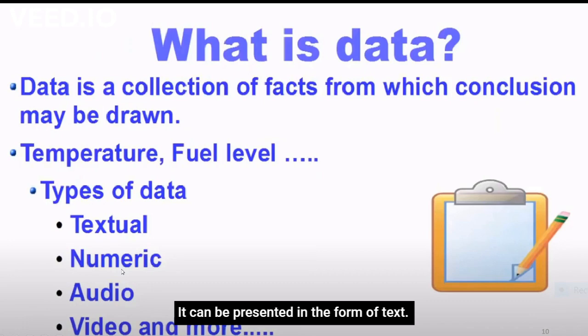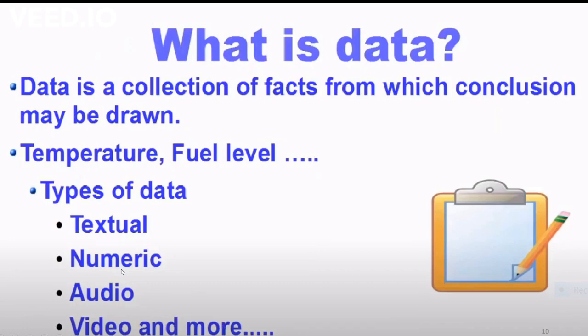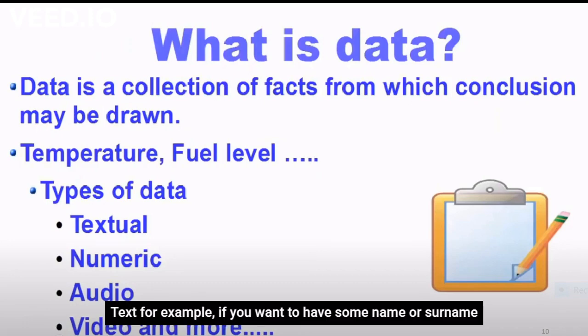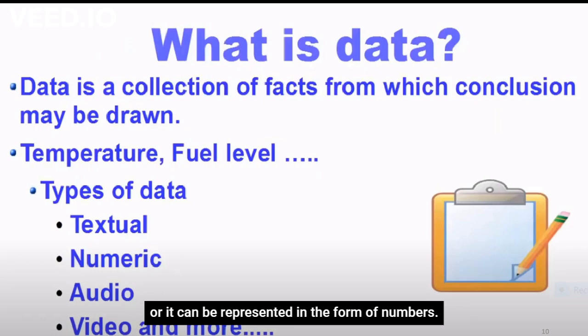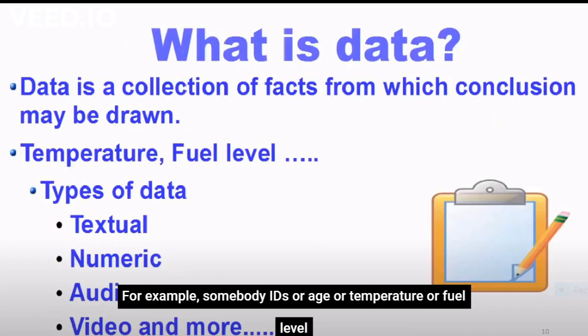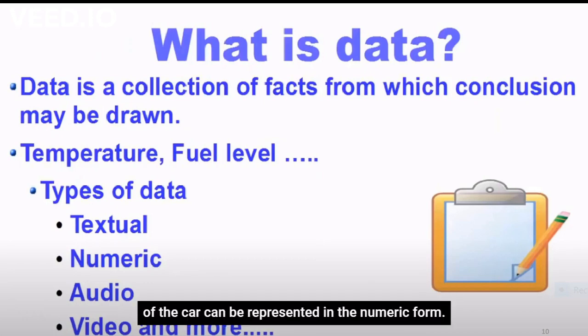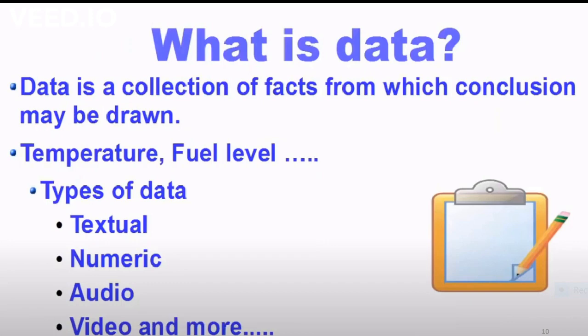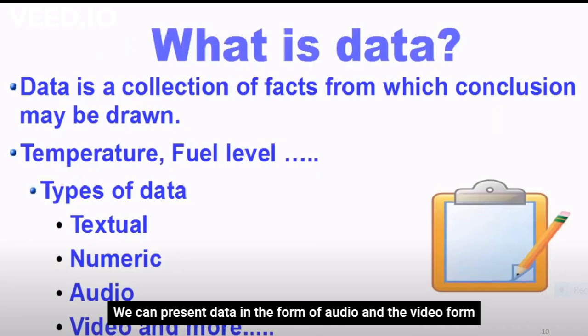Now data can be presented in many forms. It can be presented in the form of text—for example, if you want to have some name or surname or address, you can use this kind of data in the form of text. Or it can be represented in the form of numbers—for example, IDs or age or temperature or fuel level of the car can be represented in numeric form. We can present data in the form of audio and video or any other form. So data can be anything which leads to a decisive conclusion.